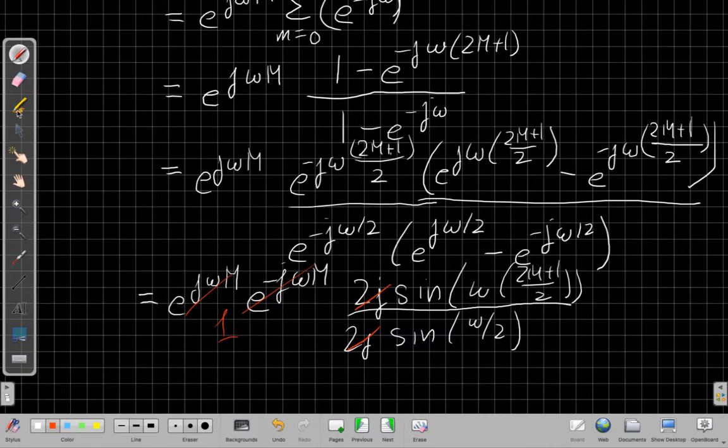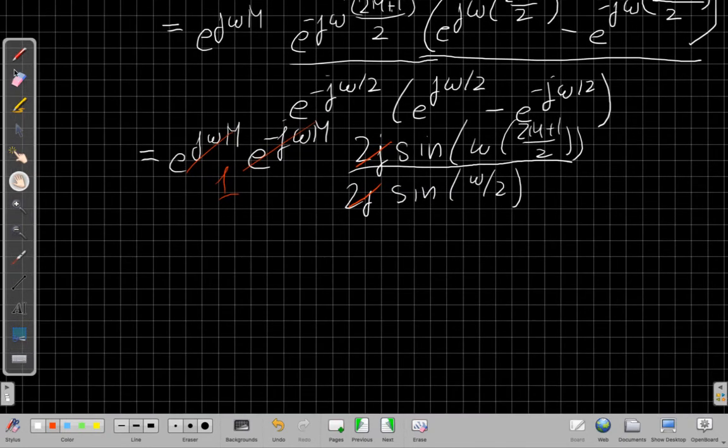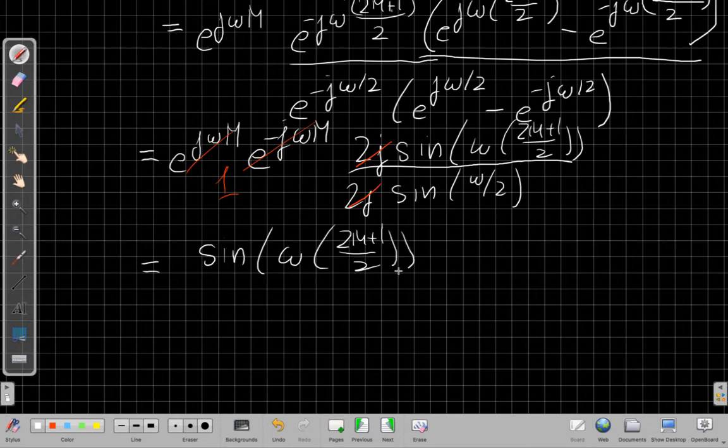And the denominator, I have 2j times the sine of ω/2. And so now I can cancel those 2j's out. These things cancel and leave me a 1. Those exponents cancel out. And so now the advantage of taking this detour of factoring things out starts to become clear. Because all that becomes 1. What I'm left with is that the Fourier transform of this pulse is the sine of ω(2M+1)/2 over the sine of ω/2.